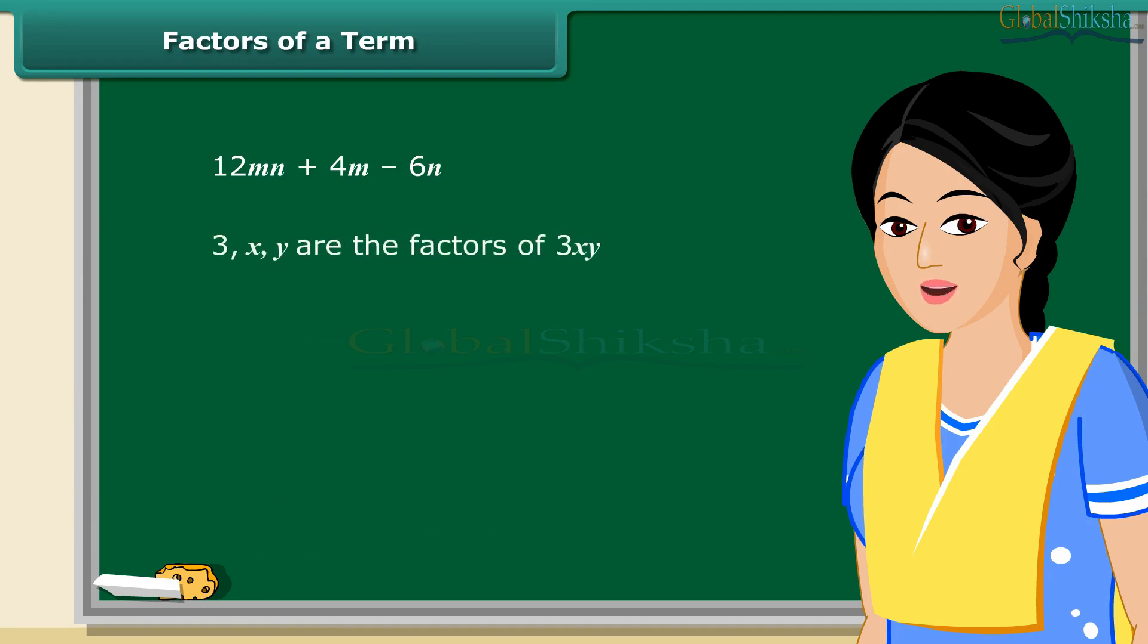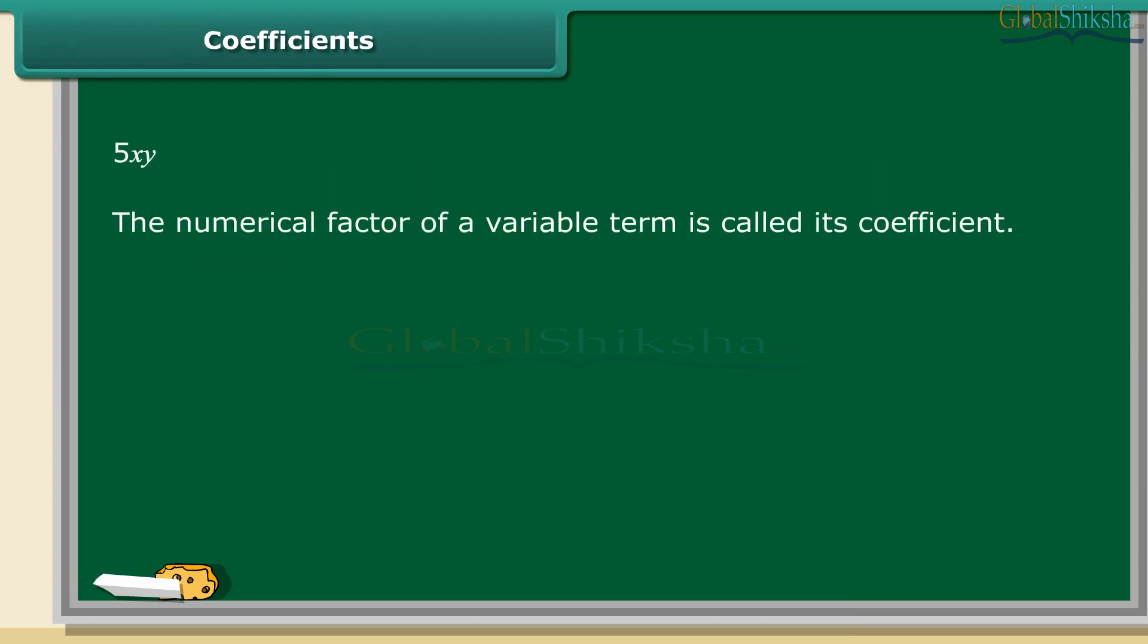A term is a product of its factors. But what are these factors? Look at this term. We say that 3, x and y are the factors of the term 3xy. Do you know we can also represent 5xy + 10 by a tree diagram? See, the dotted lines are used here for factors and continuous lines for terms. Remember, the factors cannot be further factorized. The numerical factor of a variable term is called its coefficient. See in the term 5xy, 5 is the coefficient of the whole term.